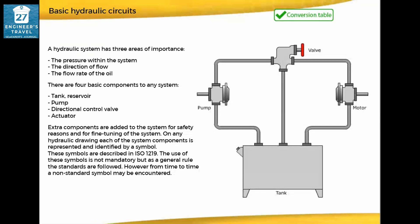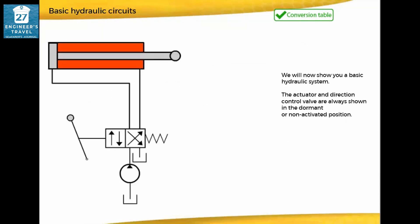On any hydraulic drawing, each of the system components is represented and identified by a symbol. These symbols are described in ISO 1219. The use of these symbols is not mandatory, but as a general rule the standards are followed; however, from time to time a non-standard symbol may be encountered. We will now show you a basic hydraulic system. The actuator and direction control valve are always shown in the dormant or non-activated position. Activate the lever on the direction control valve to move the actuator.